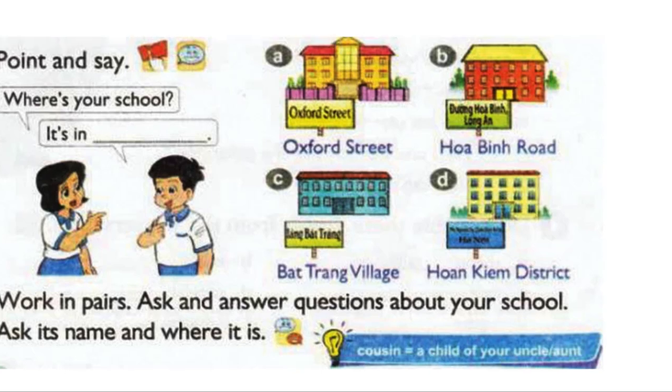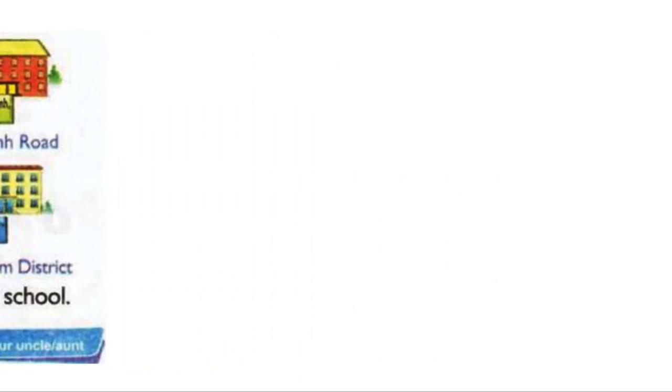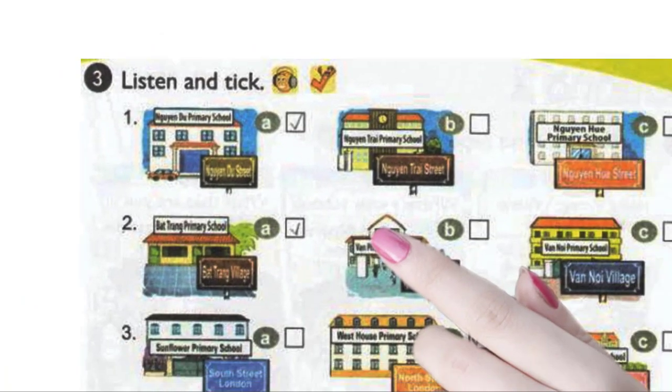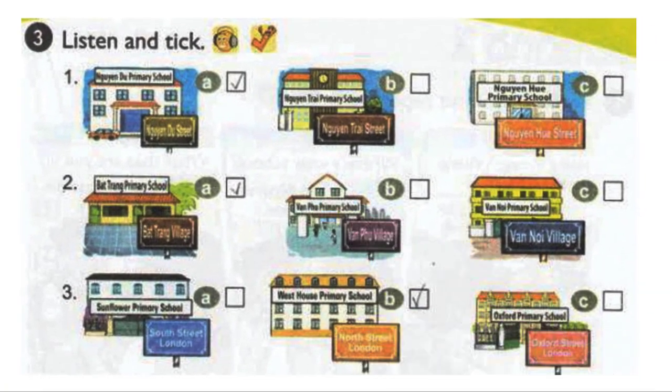Page 41. Activity 3. Listen and tick. 1. Where's your school? It's in Nguyen Tzu Street. Is it in Hanoi? No, it isn't. It's in Nam Din.